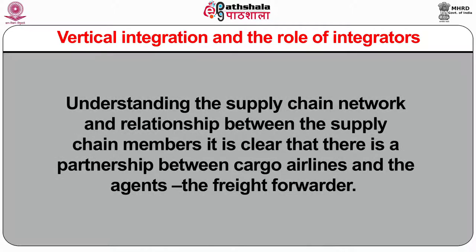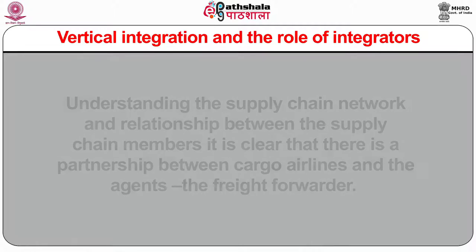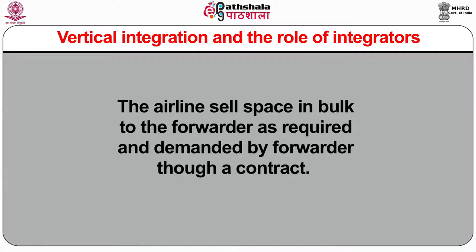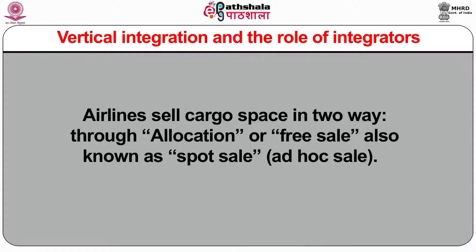Understanding the supply chain network: there is a partnership between cargo airlines and the freight forwarder. Airlines sell space in bulk to the forwarder as required through a contract. The forwarder then sells the space they bought from airlines to the shipper and handles packaging of goods. Airlines sell cargo space in two ways: through allocation or free sale, also known as spot sale or ad hoc sale.